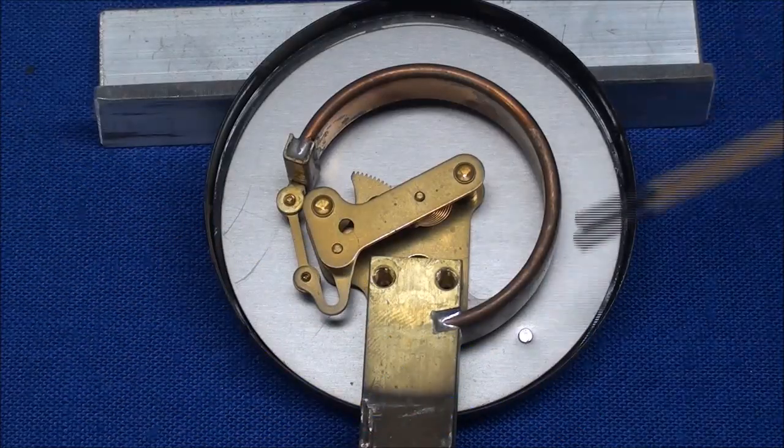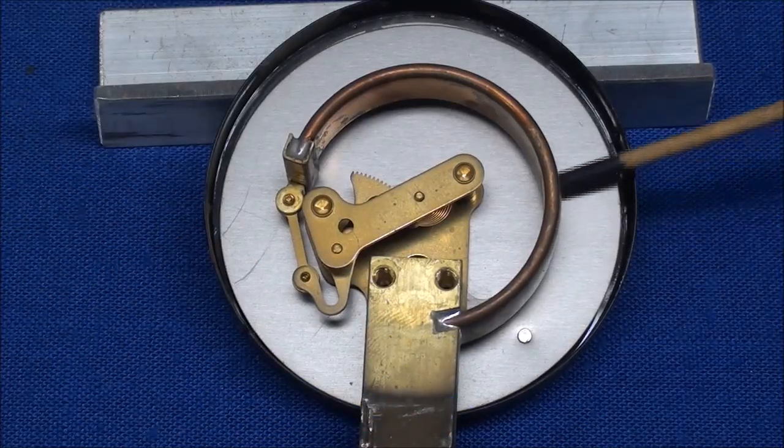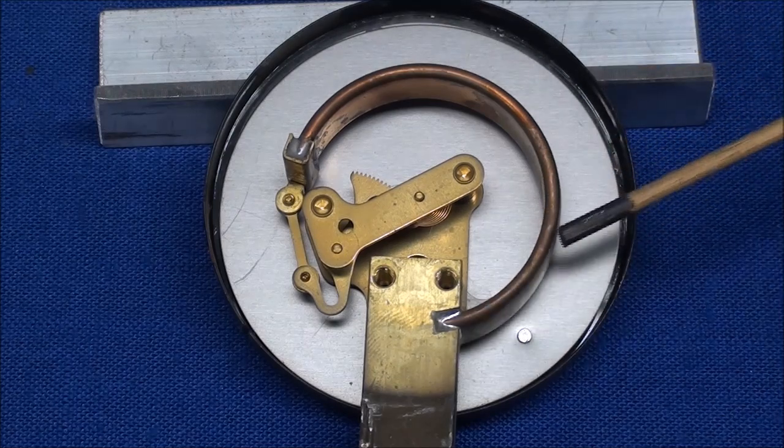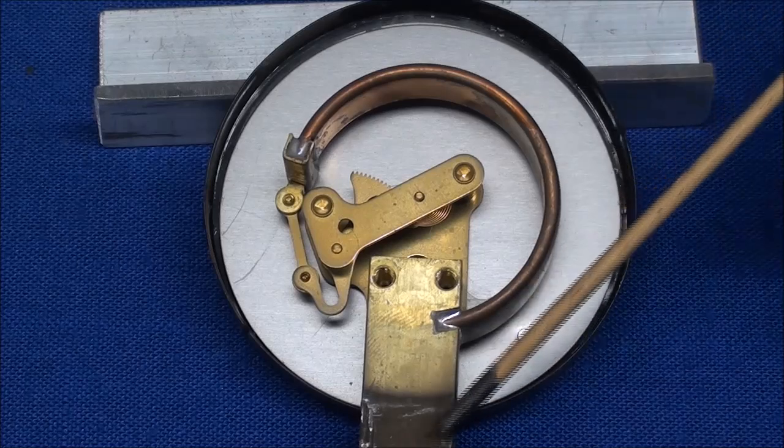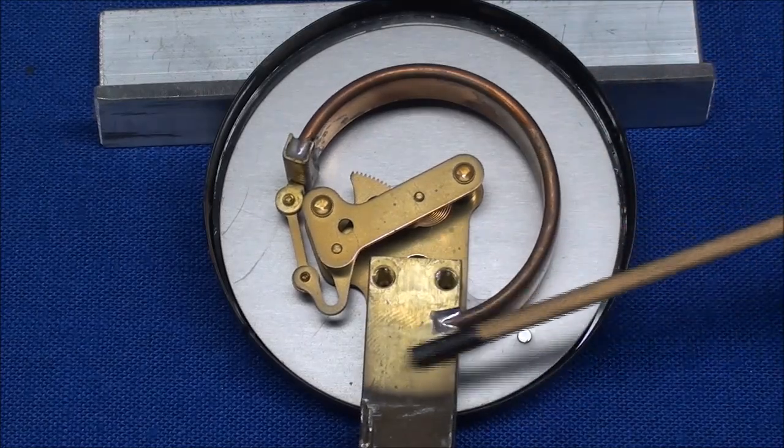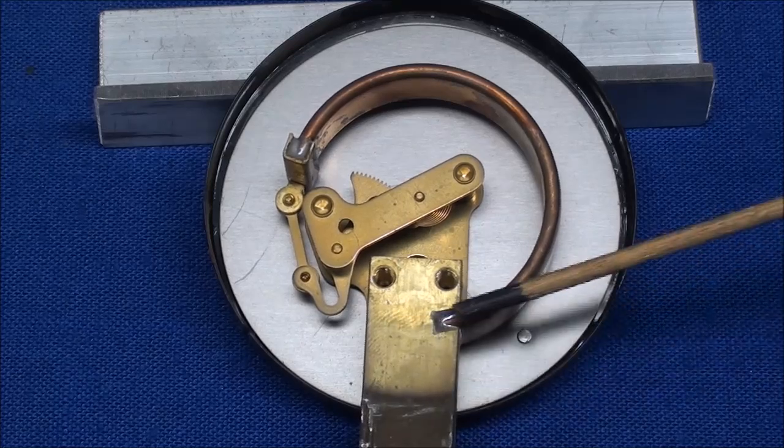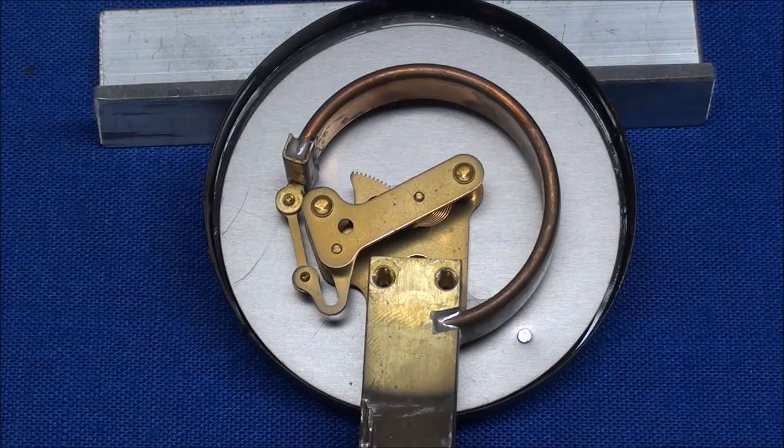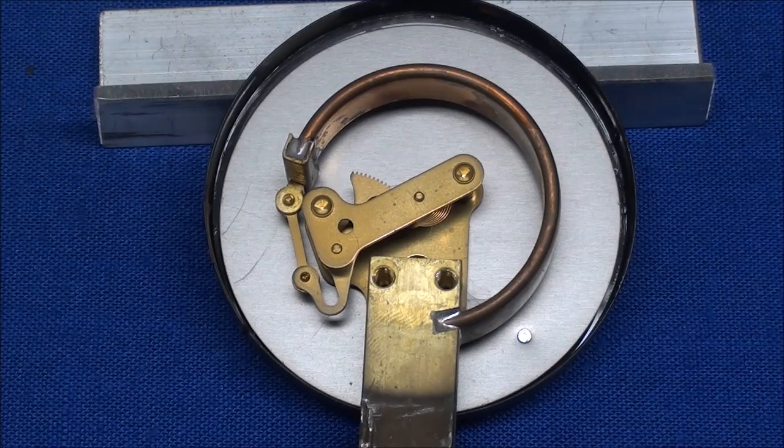The Bourdon tube is nothing more than a piece of copper tubing that has been flattened and then bent into a circular formation here. And it's soldered to the brass, the square brass part right here, just soldered, and then it's also soldered on the other end so that it is leak proof, in other words, air tight.